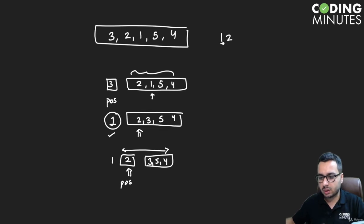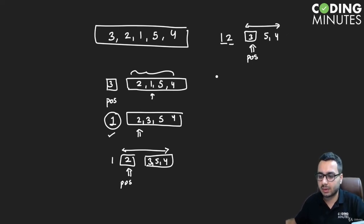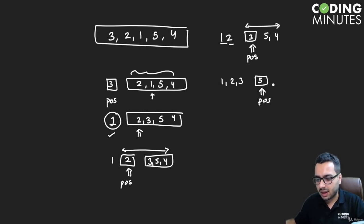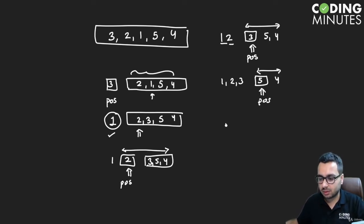One and two are in the right position. We move to three — the minimum in the remaining elements is three itself, so we move on. Next, we're at five, and we check the minimum in the unsorted part five and four. The minimum is four, so we swap it with five at the current position, giving us one, two, three, four.